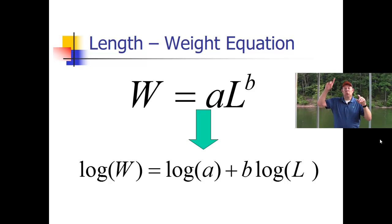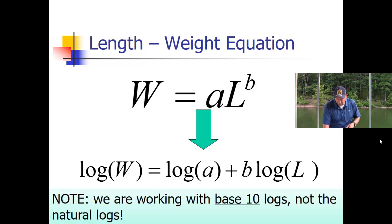To convert this, we take the log of a plus the log of L. If you raise something to a power, that means you multiply that power times the log. So when we log transform it, we get log(W) = log(a) + b×log(L). This is something we can easily solve, and then we can take the anti-log and go back if we want to.